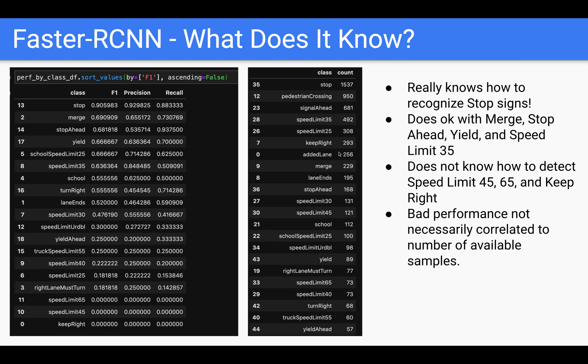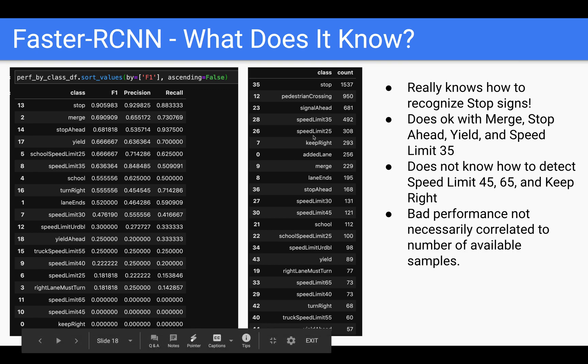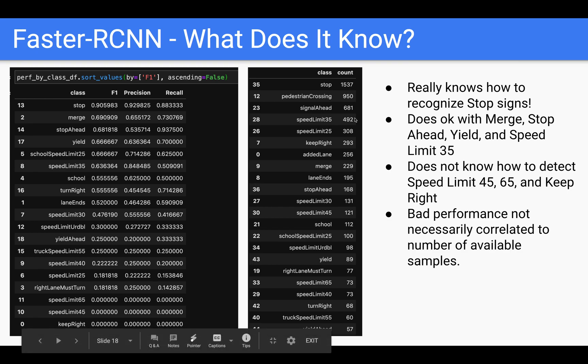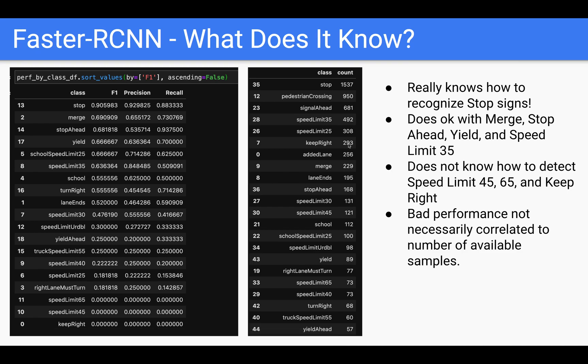What does the Faster RCNN model know? This here is a breakdown of F1 score by class type. As you can see here, this model knows how to detect stop signs very well. It does a very decent job with merge, stop ahead, yield, school speed limit 25, and speed limit 35. But, in contrast, it does not seem to be able to detect speed limit 65, 45, or keep right at all. As a point of interest, I included the class count breakdown on the right. As you can see, stop sign with the best F1 score did indeed have the most amount of samples. But, in contrast, keep right, which had a zero F1 score, it actually had about 300 samples or so. There doesn't seem to be an exact direct correlation between bad performance for a class and the number of available samples for that class.